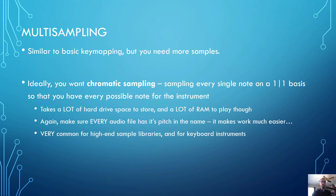Multi-sampling is similar to key mapping but with more samples. Ideally you want chromatic sampling, where you sample every single note on a one-to-one basis so there is no transposition — everything is just the root key triggering that sample. The downside is that it takes a lot of hard drive space to store and RAM to play. You want to make sure every audio file has its pitch in its name, which makes it much easier to drag and line up on the sampler. This is very common for high-end sample libraries and keyboard instruments in particular.